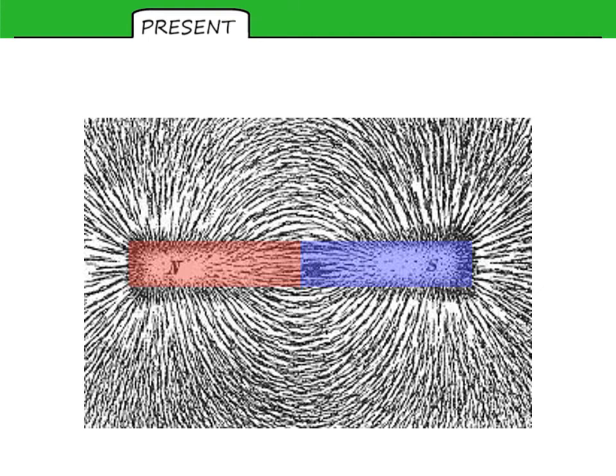We may also use metal filings, iron filings specifically, to plot the shape of magnetic fields. However, they can tell us nothing about directionality.